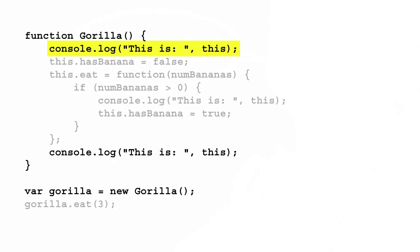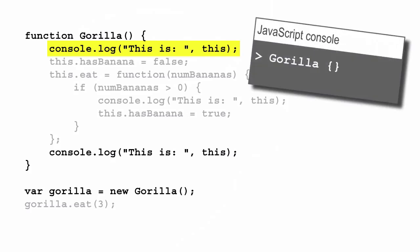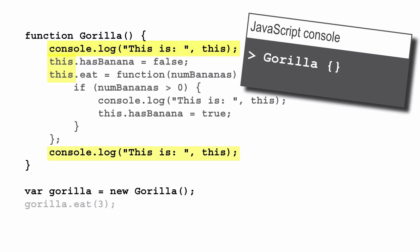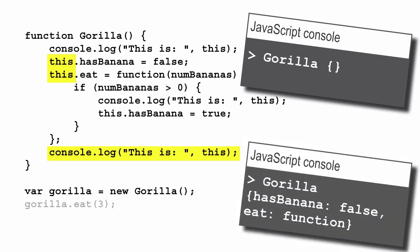Calling a function with `new` changes how `this` works. Now `this` is set to an empty object — the new object we're creating by calling this constructor function. When we display the value of `this` at the beginning of the constructor function, we see that it's an empty object. We then proceed to fill in that empty object by adding properties to it. At the bottom of the constructor function, the value of `this` is now a gorilla object with two properties: `hasBanana` and a method `eat`. The object that is the value of `this` is then returned from the constructor function and assigned to the gorilla variable.